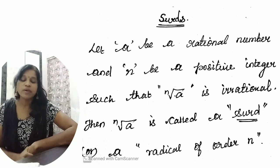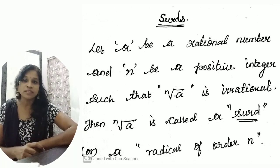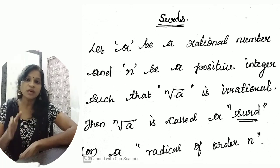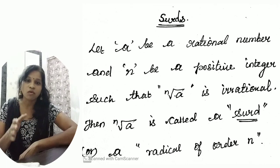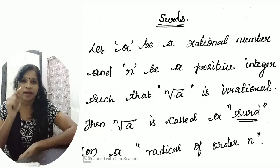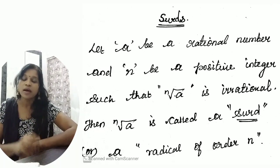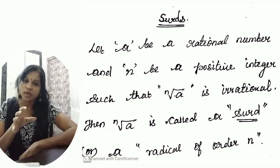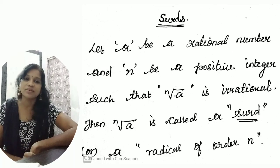Let a be a rational number and n a positive integer such that the nth root of a is irrational — then that nth root of a is called a surd. So the irrational root of a positive rational number is called a surd. Inside the radicand, a must be a rational number, and the whole nth root of a must be irrational. Then only we can call that number a surd.